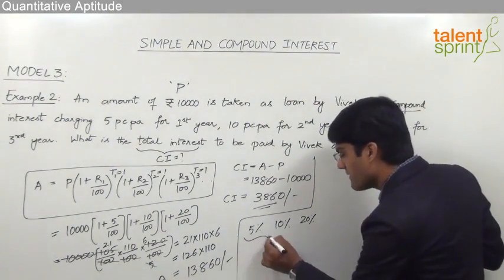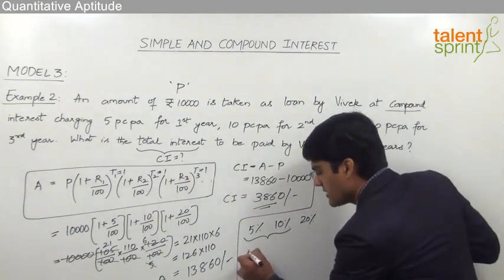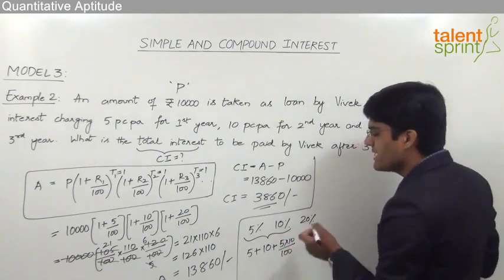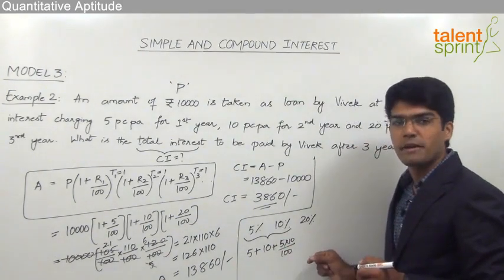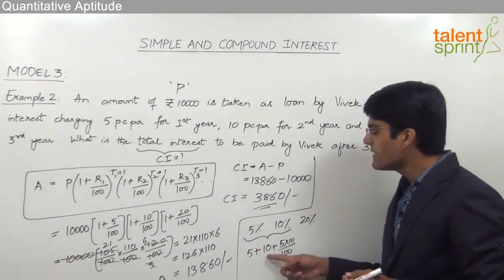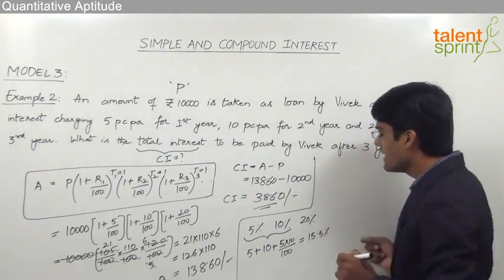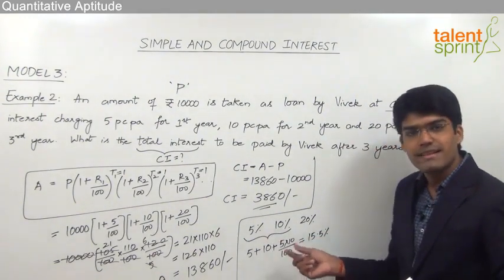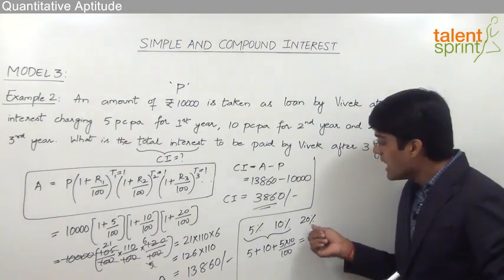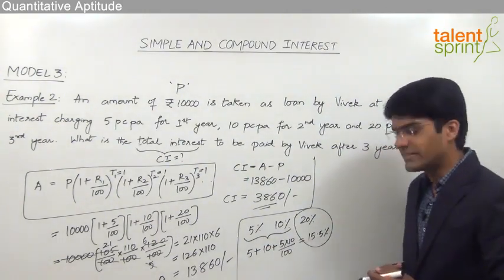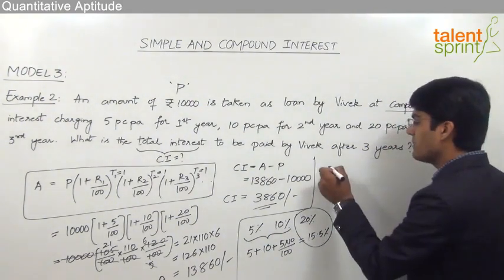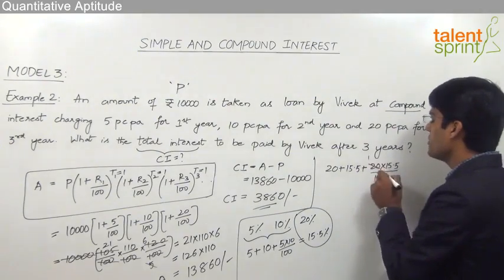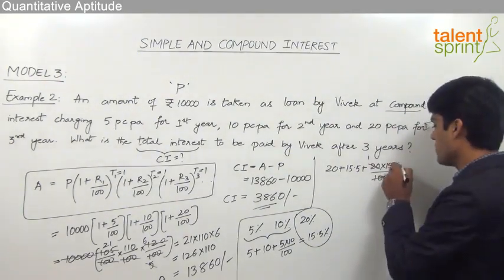First, calculate the net effective percentage for 5% and 10% using A + B + A×B/100: 5 + 10 + (5×10)/100 = 15 + 0.5 = 15.5%. So the compound interest for the first two years together is 15.5%. Now take this 15.5% and combine it with 20% for the third year using the same formula: 20 + 15.5 + (20 × 15.5)/100.